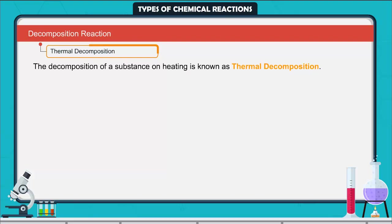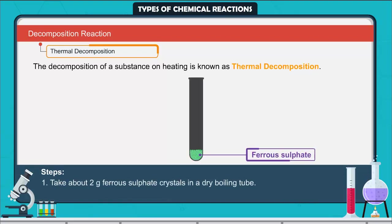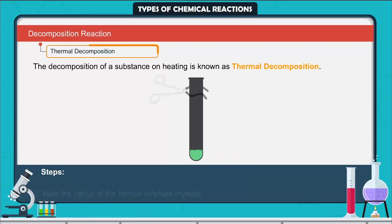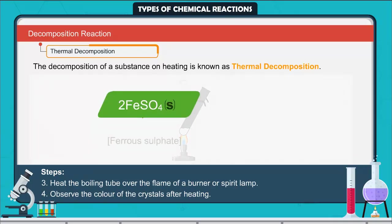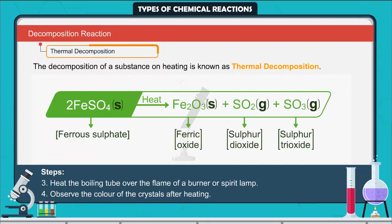Activity for thermal decomposition: Take about 2g of ferrous sulfate crystals in a dry boiling tube. Note the color of the ferrous sulfate crystals. Heat the boiling tube over the flame of a burner or spirit lamp. Observe the color of the crystals after heating. The green color of the ferrous sulfate crystals changes. In this reaction, a single reactant breaks down to give simpler products.